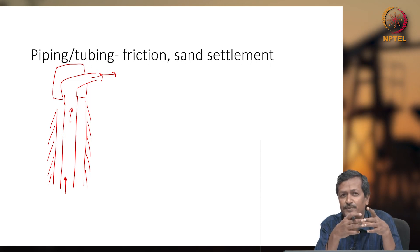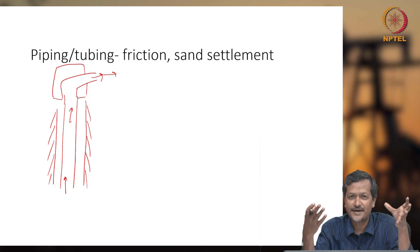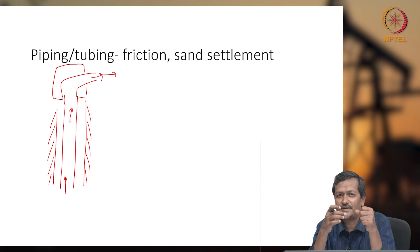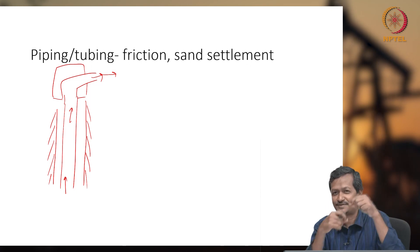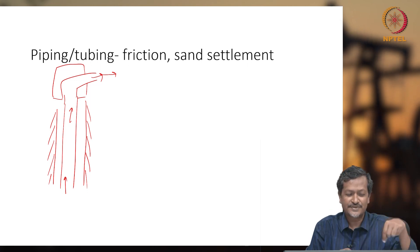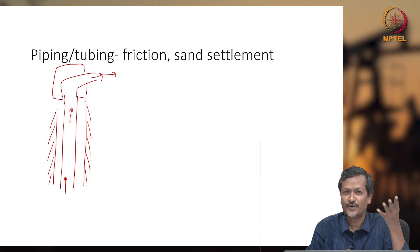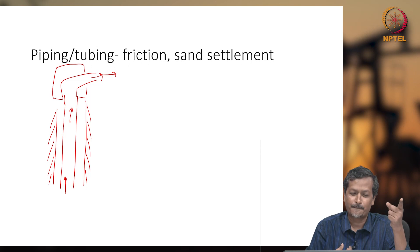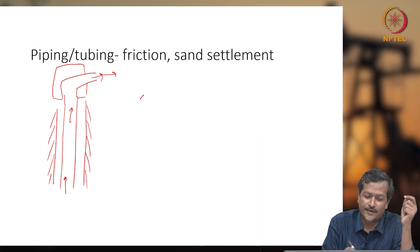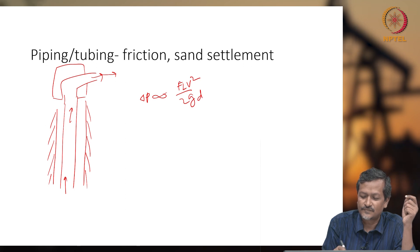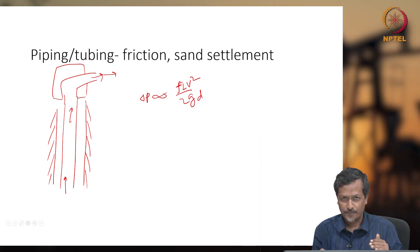All these things are pipes. How do you design a pipe — whether you select a 1-inch pipe or 10-inch pipe? What is the criteria? If you select a very narrow pipe, like a straw for drinking mango juice, can you use that for oil and gas production? You could, but the issue is that it will give very high friction. The pressure drop through the pipe is given by: ΔP = f · L · V² / (g · D), where ΔP is the pressure drop through the pipe.